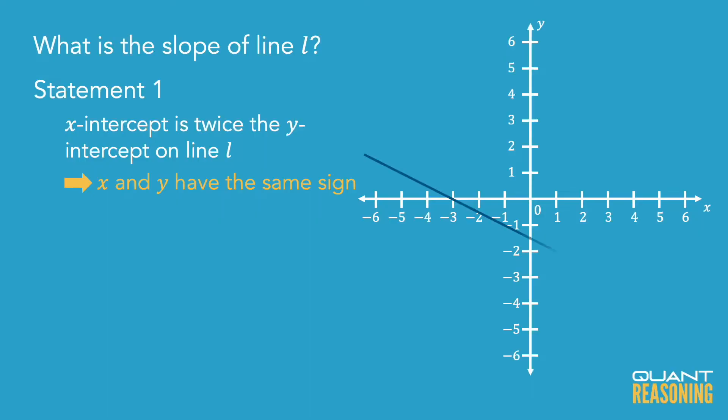And we can look at different cases and we can see how we can move the x-intercept up the x-axis and the y-intercept would have to move up the y-axis proportionally so that the x-intercept is still twice the y-intercept. And we can see what that looks like on the negative sides.